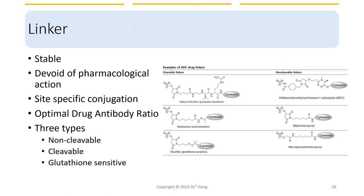As for the linkers, they need to be stable enough in circulation and have no pharmacological actions by themselves, because we don't want additional cytotoxicity. The site for conjugation needs to be very specific and controlled so that every batch is the same. It also needs to have an optimum drug-to-antibody ratio to deliver a balanced toxic load. There are three types of linkers: non-cleavable, cleavable, and glutathione-sensitive. These are the three major linkers used in antibody-drug conjugates currently on the market.